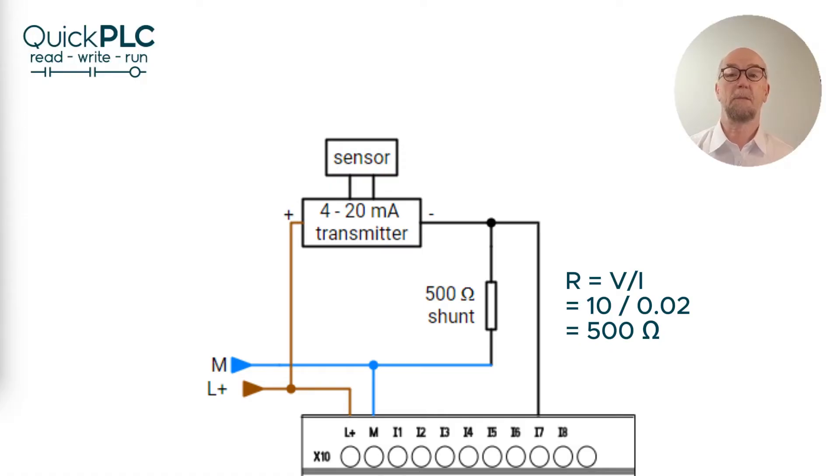This solves several problems for us. We can power the sensor from the loop provided its internal circuitry can work at four milliamps. The 500 ohm input impedance makes the circuit much less susceptible to electrical interference. And we now have what's called a live zero at four milliamps. If a wire breaks we'll have zero milliamps. And some sensors will indicate a fault condition by giving out three or three and a half milliamps. This can be used to generate an alarm in the PLC program.